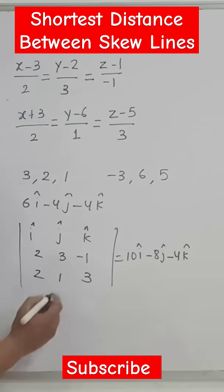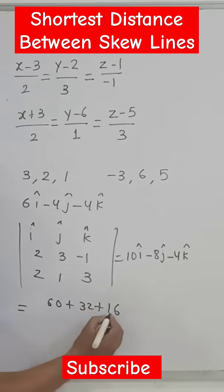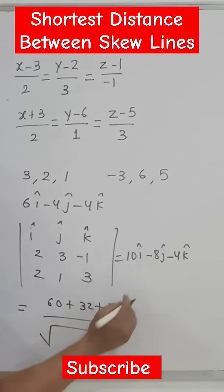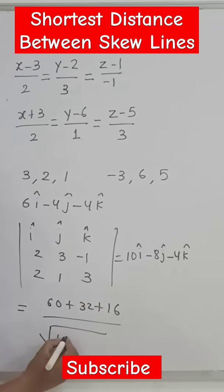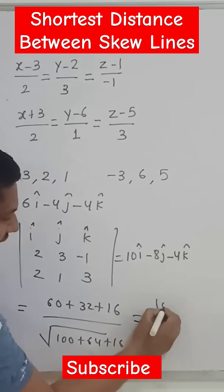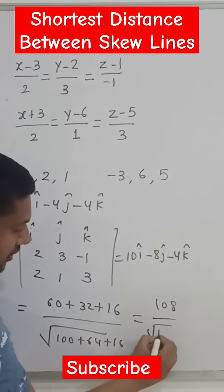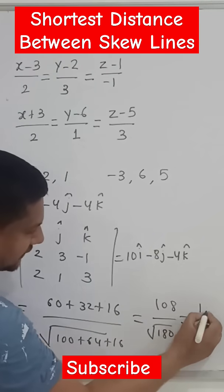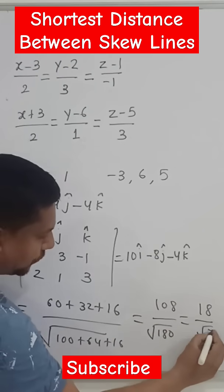Then you need to find the dot product of this two vector. So it will be 16 plus 32 plus 16 divided by the modulus of this vector: square root of 100 plus 64 plus 16. So you will get here 108 upon square root 180. After solving this, you will get 18 upon root 5.